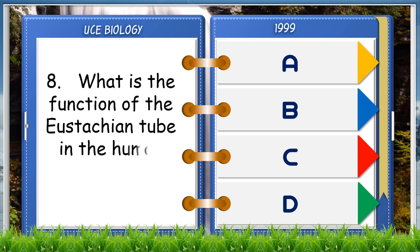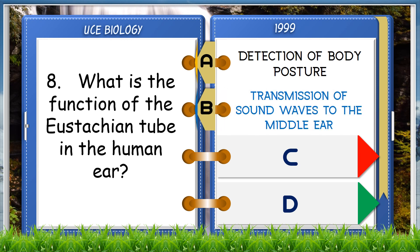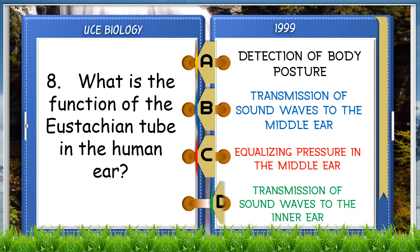What is the function of the Eustachian tube in the human ear? A. Detection of body posture, B. Transmission of sound waves to the middle ear, C. Equalizing pressure in the middle ear, D. Transmission of sound waves to the inner ear. The answer is C, equalizing pressure in the middle ear.